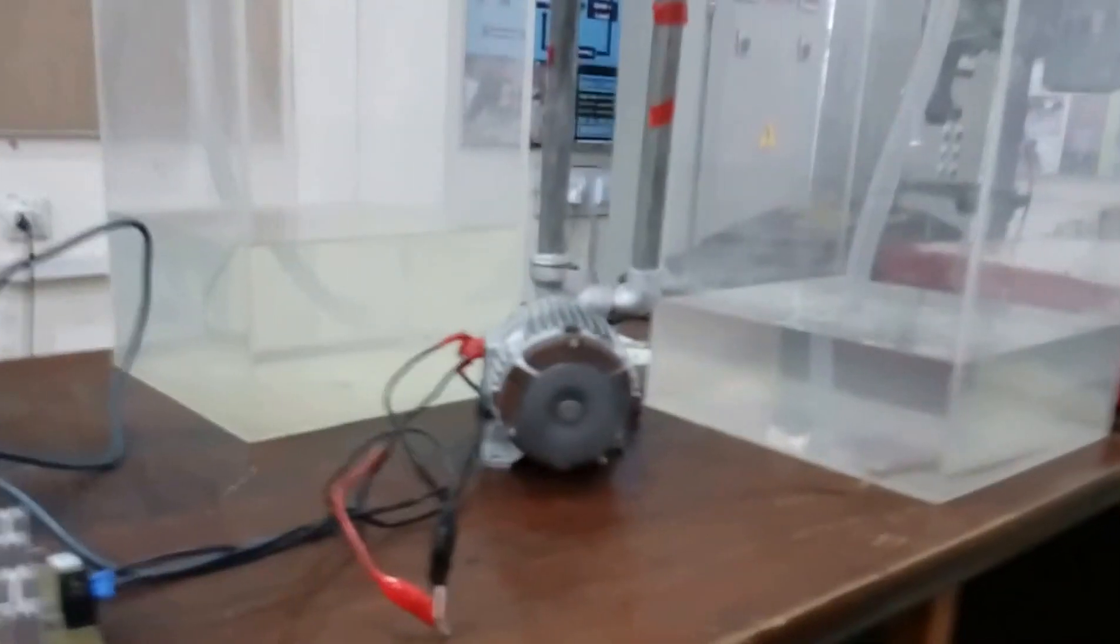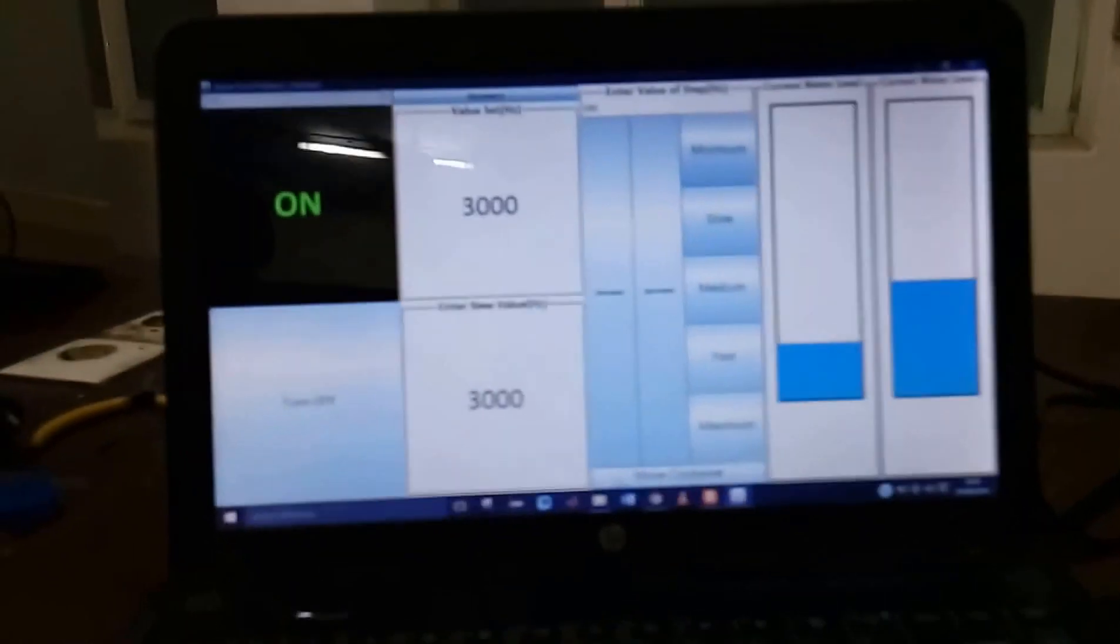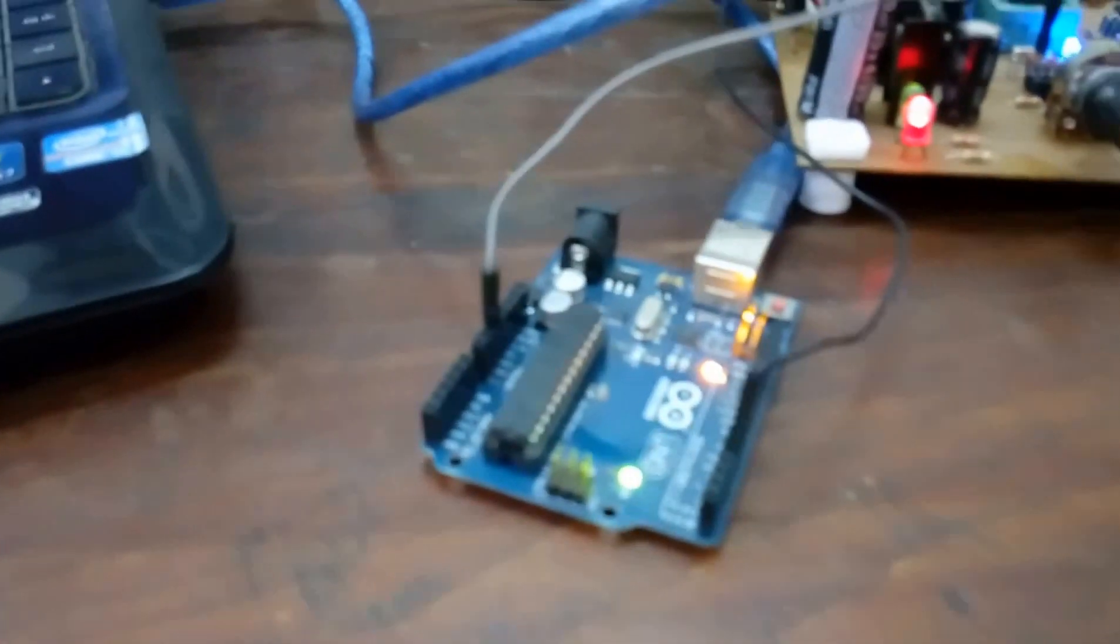This is my project: the automation of water pumping and tank level balance. We are controlling this water pump with the help of a computer or UI interface. We can increase or decrease the speed as well as change the direction of motion right away from this UI interface. This is our Arduino board that is communicating